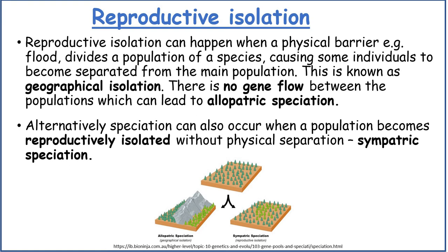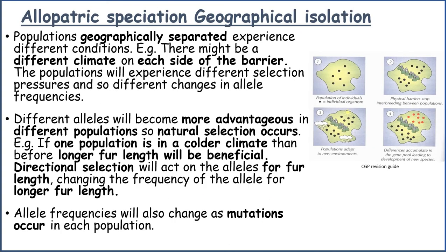When a physical barrier divides a population, there is no gene flow between the populations, which can lead to allopatric speciation. Alternatively, speciation could also occur when a population becomes reproductively isolated without physical separation, which is known as sympatric speciation. First, we'll look at allopatric speciation caused by geographical isolation.